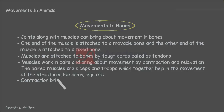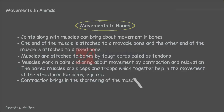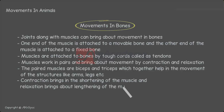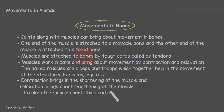Contraction of the muscle brings about shortening of the muscle. Whenever the muscle is contracted, it becomes short, and relaxation brings about lengthening of the muscle. Contraction makes the muscle short, thick, and stiff to pull the bone.